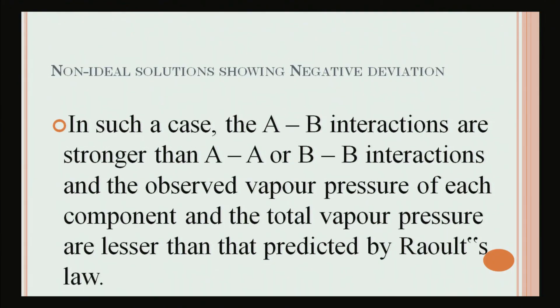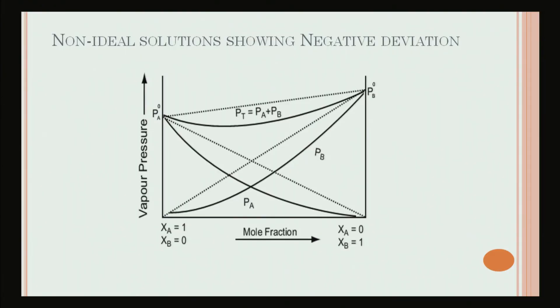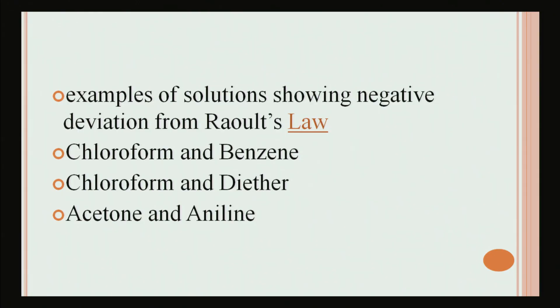For non-ideal solutions showing negative deviation, negative deviation occurs when the total vapor pressure is less than what it should be according to Raoult's law. In such cases, the A–B interactions (solute–solvent) are stronger than solute–solute or solvent–solvent interactions, and the observed vapor pressure of each component and the total vapor pressure are less than predicted by Raoult's law. You can see the curve going down, indicating negative deviation. Examples showing negative deviation include chloroform and benzene, chloroform and diethyl ether, and acetone and aniline.